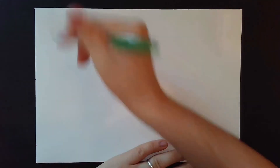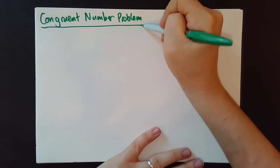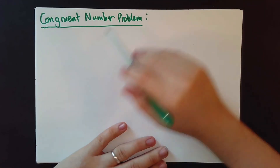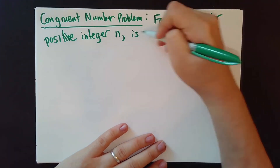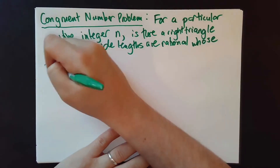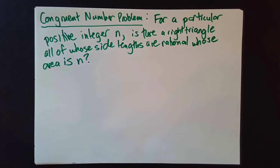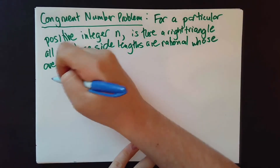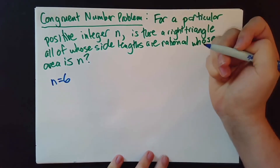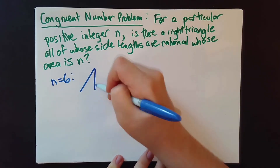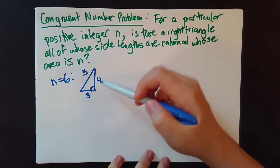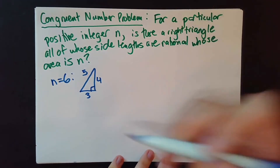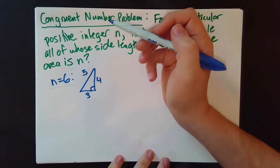One famous problem in number theory related to elliptic curves is the congruent number problem. For each positive integer n, the question is: is there a right triangle, all of whose side lengths are rational, whose area is n? If the answer is yes, we say n is a congruent number. For example, if you choose n = 6, the right triangle with side lengths 3, 4, and 5 has area ½ × 3 × 4 = 6, so 6 is a congruent number.